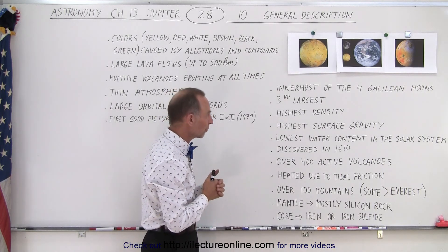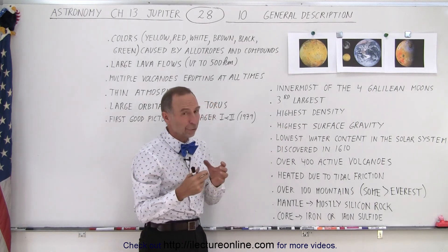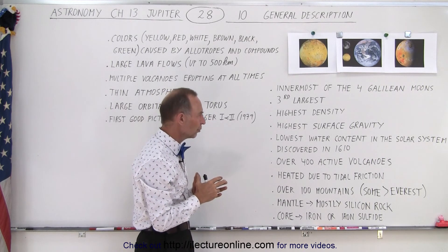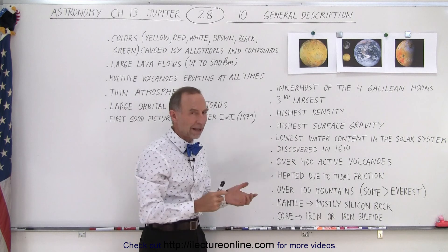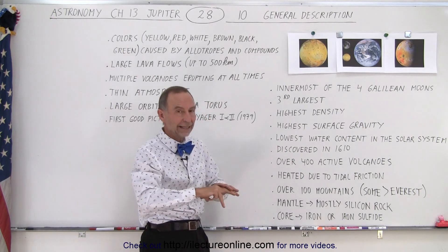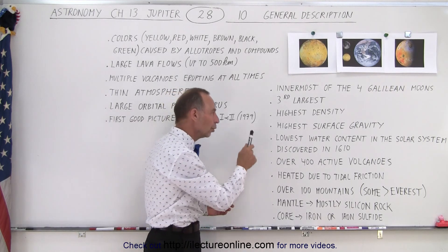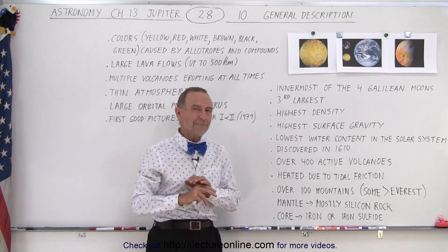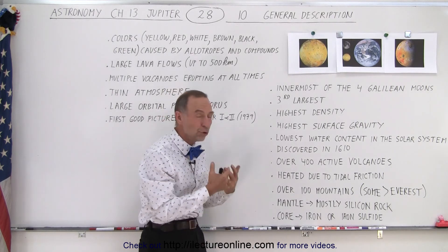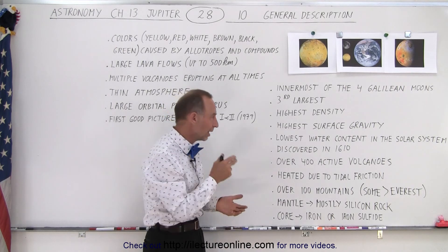It is the third largest moon of the four Jovian planets. It has the highest density and therefore probably the largest iron core of the four moons. And it also has the highest surface gravity that comes from the moon being fairly large and the fact that it has the highest density. It has also the lowest water content of any body in the solar system. There's virtually no water of any sort at even at the atomic level on Io.